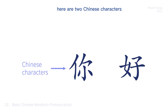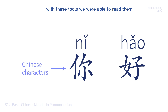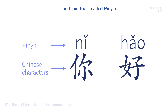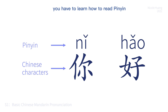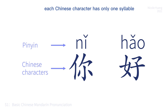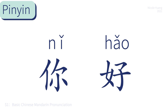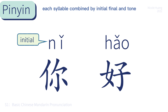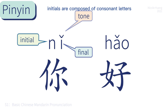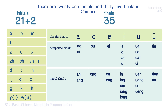Here are two Chinese characters — you have no clue at all about the pronunciation. But now with these tools we will be able to read them, and these tools are called Pinyin. Before you learn how to write characters, you have to learn how to read Pinyin. Each Chinese character has only one syllable. Each syllable is combined by an initial, a final, and a tone. Initials are composed of consonant letters; finals, except for the nasal finals, are vowel letters. There are 21 initials and 35 finals in Chinese.